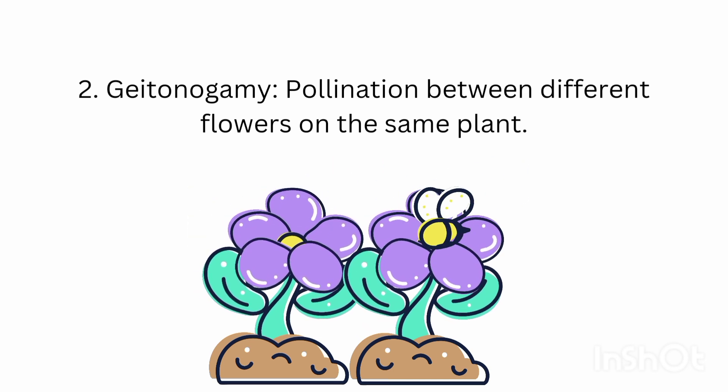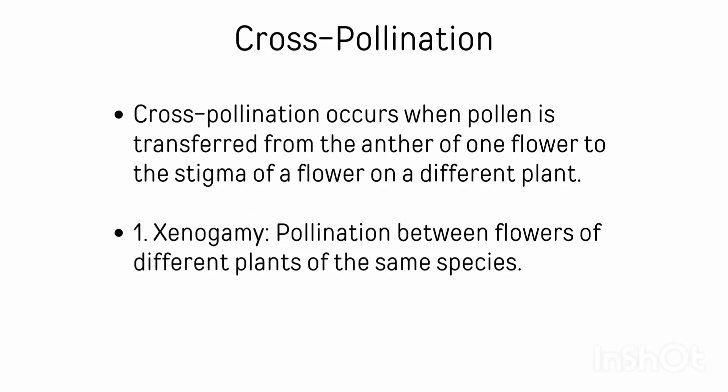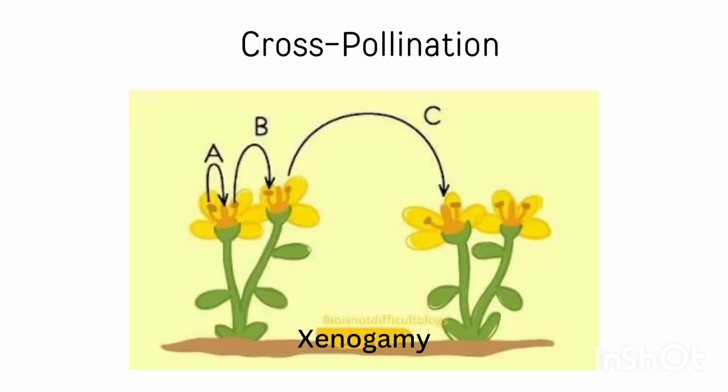Next we will see cross-pollination. Cross-pollination occurs when pollen is transferred from the anther of one flower to the stigma of a flower on a different plant. Xenogamy is pollination between flowers of different plants of the same species — the species is the same but the flowers are on different plants. This is an example of cross-pollination.